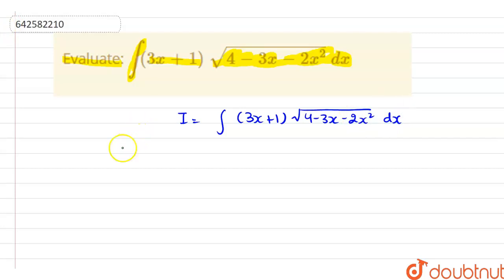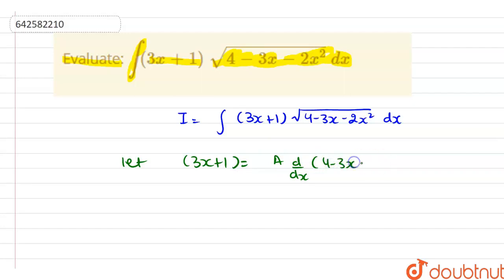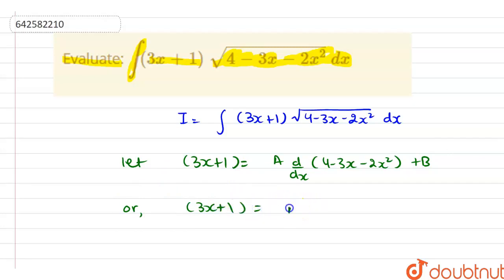Now here let's say that 3x + 1 is equal to a into d/dx of (4 minus 3x minus 2x square) plus b. So after solving it further, 3x + 1 is equal to a into (minus 3 minus 4x) plus b.